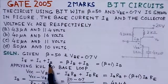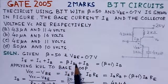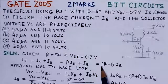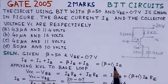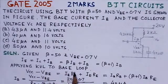Collector current can be written as beta IB plus the base current, so we can write this expression as (beta plus 1) into IB. Now we apply KVL to the base loop.